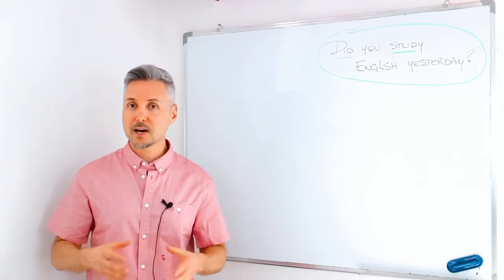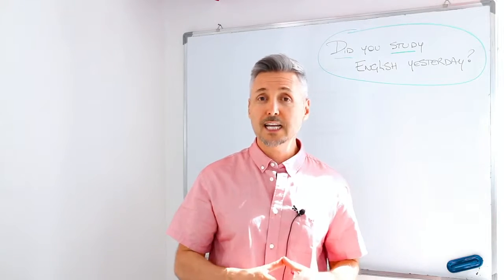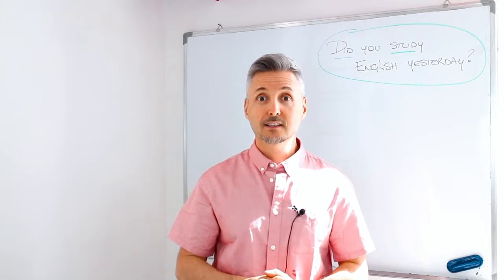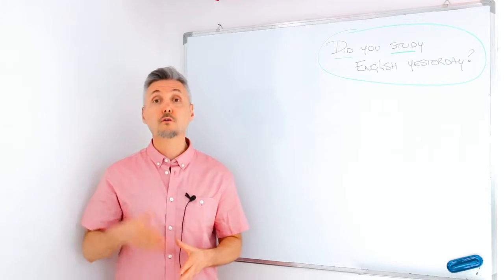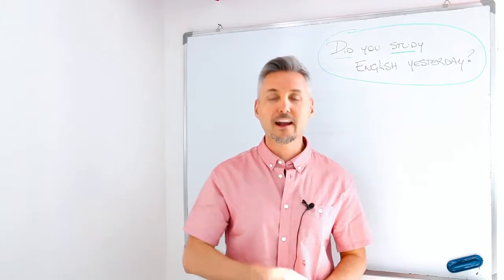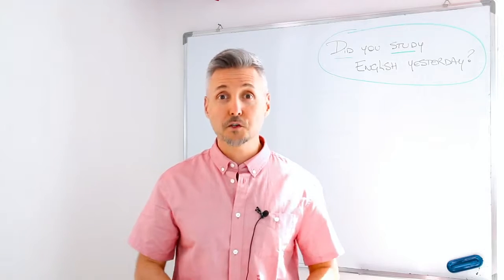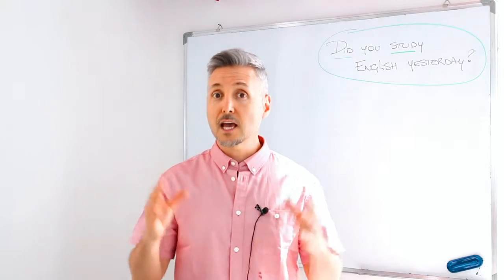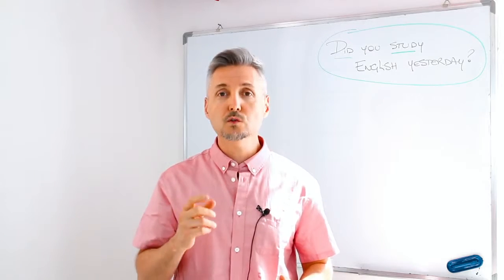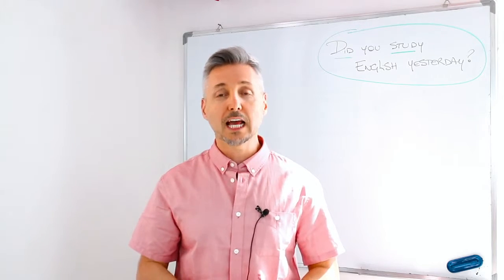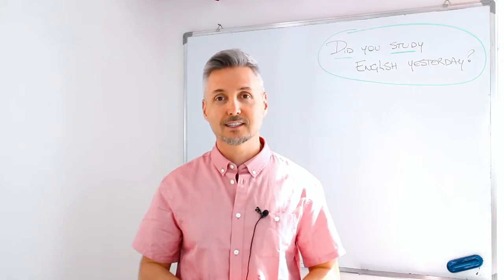Let's recap. In this video we learned the past simple. We use the auxiliary 'did' for making questions or for negative sentences. We use the past simple for single or repeated actions where you know when they happened. Do not forget to learn the regular and irregular verbs. That's it for today — I hope you enjoyed the lesson. If you haven't subscribed to my channel, please do so; you'll find a lesson every week. If you want to share the lesson, I would really appreciate it. Thank you very much for watching, and see you next week with a new lesson. Take care!